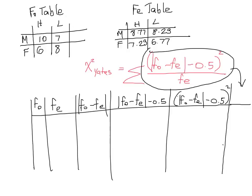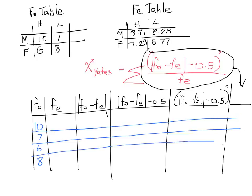Okay, so now we can list our fo values. They're all there listed for us up there, so I'm just going to rewrite them here: 10, 7, 6, and 8. Now, the order that you write those values in does not matter as long as you are consistent when you write your fe values.